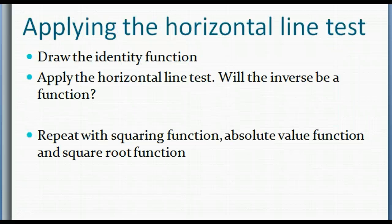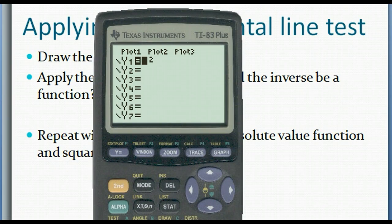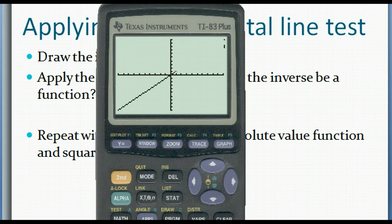Applying the horizontal line test: draw the identity function and apply the horizontal line test — will the inverse be a function? Let's look at the calculator. The identity function is y = x. Graphing it, this is a function by the vertical line test. If we look at the horizontal line test, the inverse will also be a function.